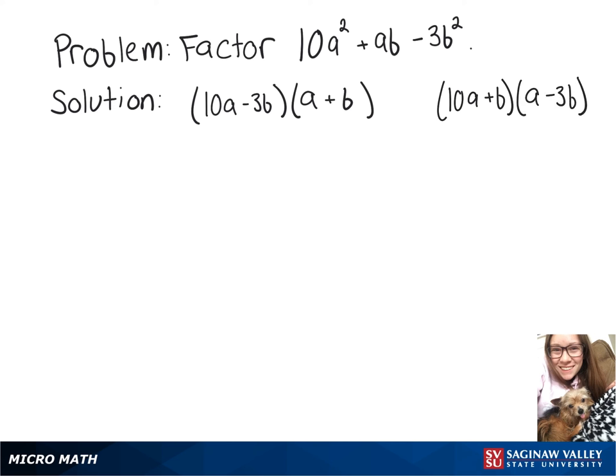Now we're going to multiply those out and see if it gives us what we started with. So when we FOIL this one, we get 10a squared plus 10ab minus 3ab gives plus 7ab minus 3b squared. So we see that's not the one.